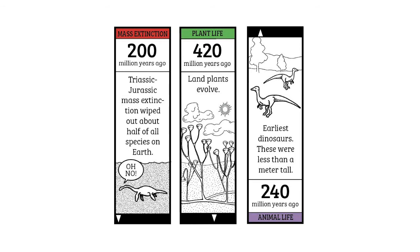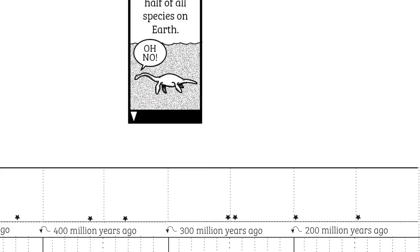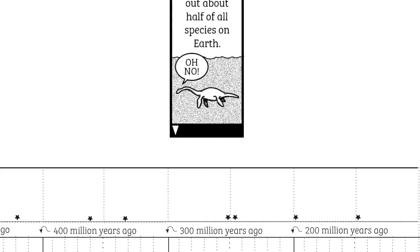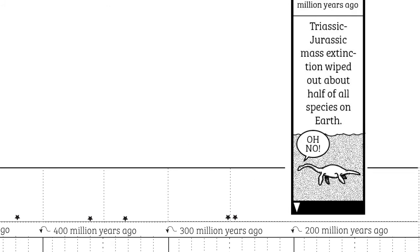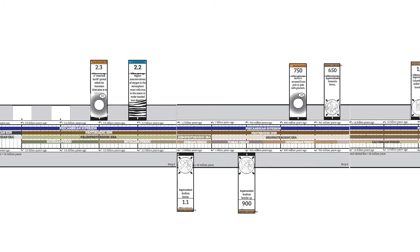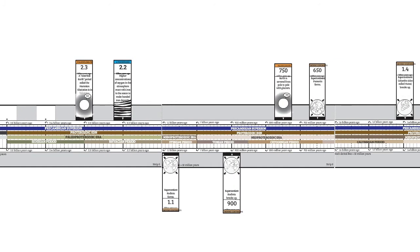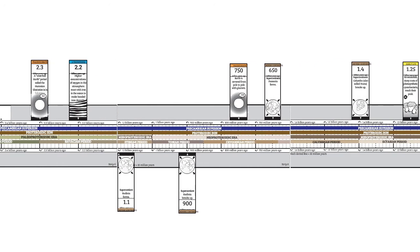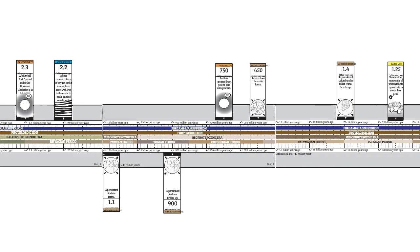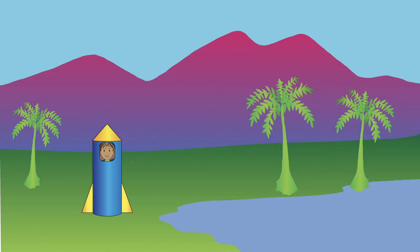Once you've built the timeline, use scissors to cut out all of the timeline tabs. Now figure out where each tab goes. There are little white triangles on each tab and little black stars on the timeline to help you figure out the position for each tab. When you've glued all the tabs onto your timeline, your timeline is complete. Now you can use your timeline to help you travel backward in time through Earth's history.